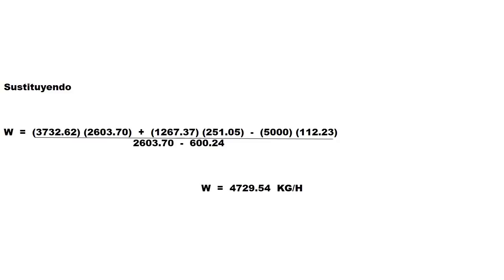Since W1 equals W2, we factor out W: W·(HW1 − HW2). Factoring the common term W, we get W = (HW1 − HW2) side.